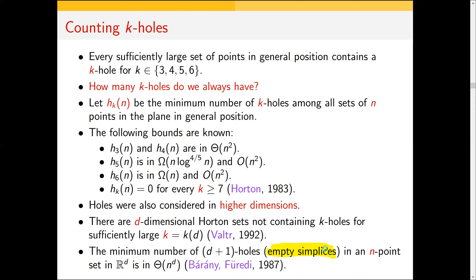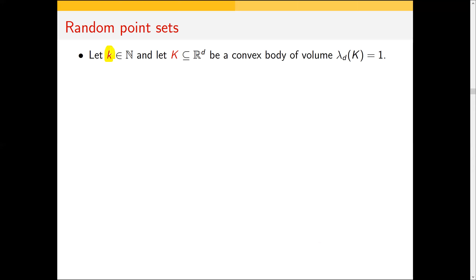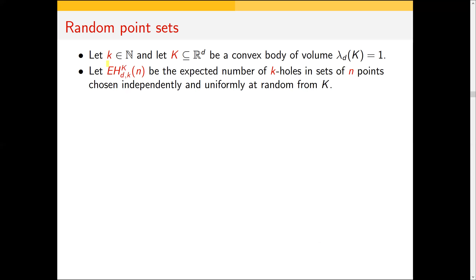In this talk we focus on random point sets. Let k be a positive integer (the hole size) and let K be a convex body in R^d with unit volume. We study the parameter EH: the expected number of k-holes in a set of n points chosen independently and uniformly at random from K. So we draw n random points and ask for the expected number of k-holes.